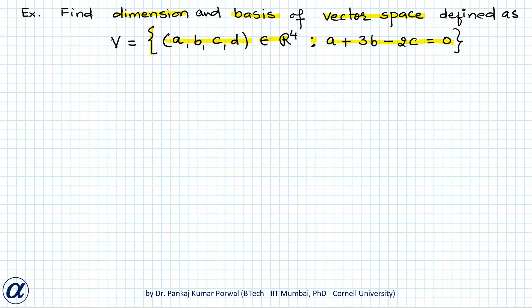So our vector space is basically a solution of a system of homogeneous equations consisting of one equation in four unknowns. So our system of equations that we need to solve is a plus 3b minus 2c equals 0. So we have only one equation in four unknowns a, b, c and d.